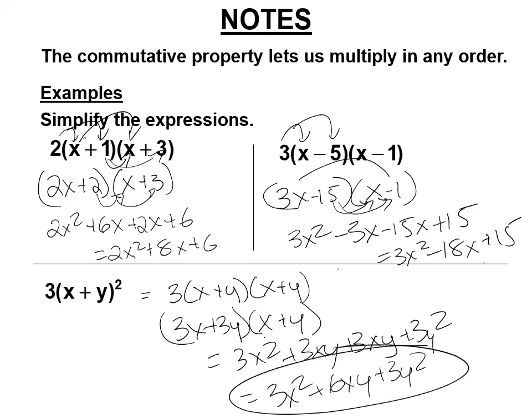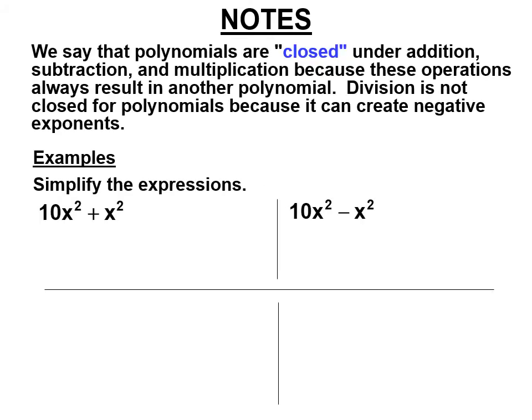You could multiply the x plus y first and then distribute to 3 — you'd get the same answer. Operations are closed if you get the same type of thing that you started with. So these are polynomials, and it turns out when you add, subtract, and multiply polynomials, you always get another polynomial — it might be a monomial, it might be a number. But when you divide polynomials, you don't always get another polynomial. This is called closure.